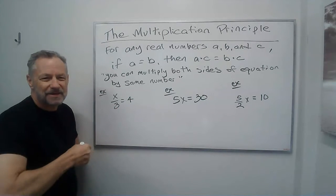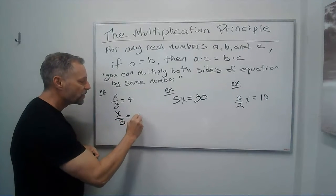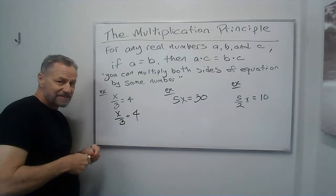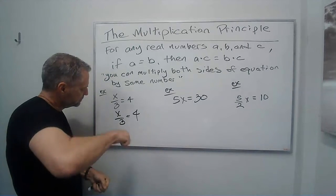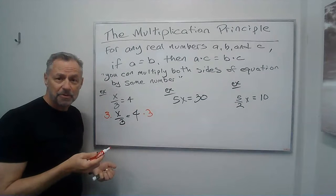So let's write this down again so we see what the original problem is. So I've got x over 3, where x divided by 3 equals 4. If I multiply the left side by 3, I can do that as long as I multiply the right side by 3 also.